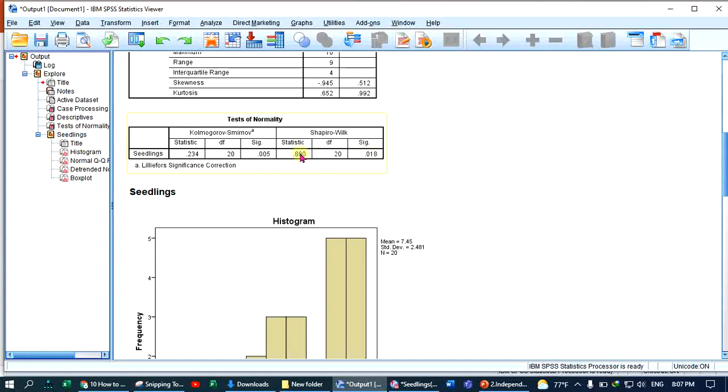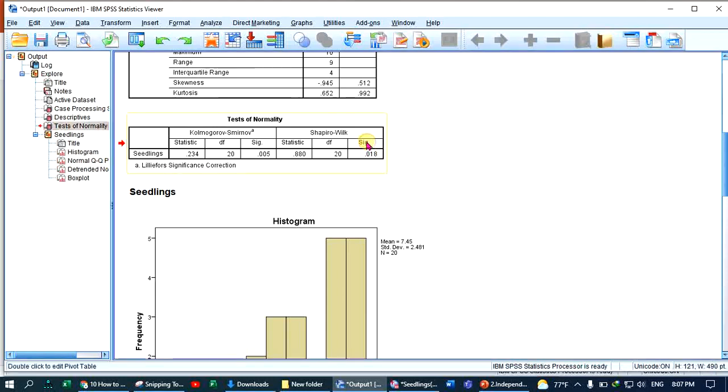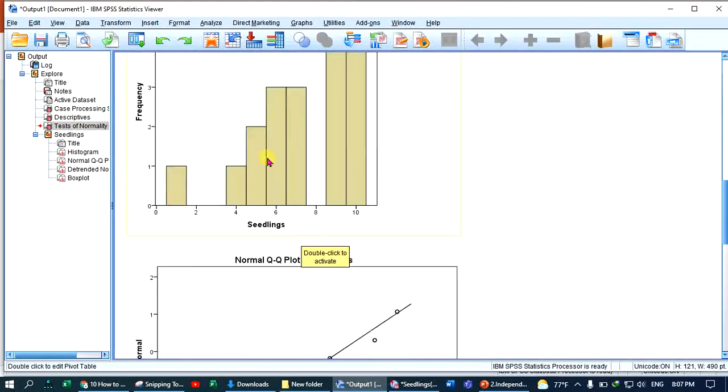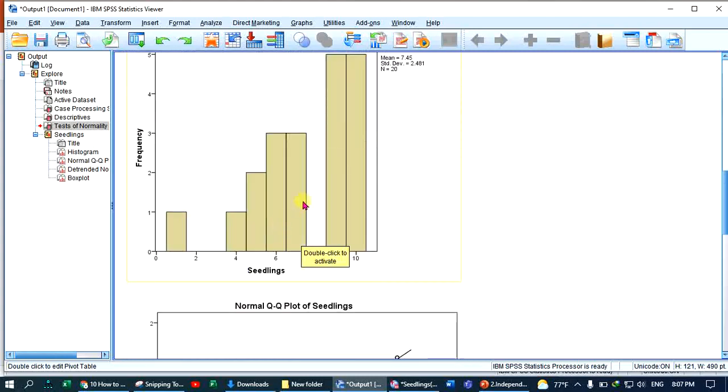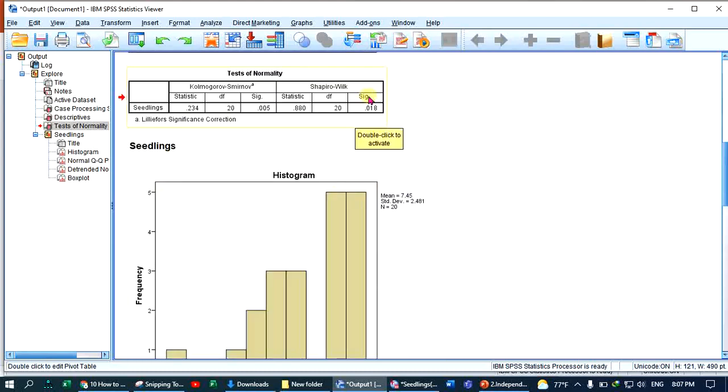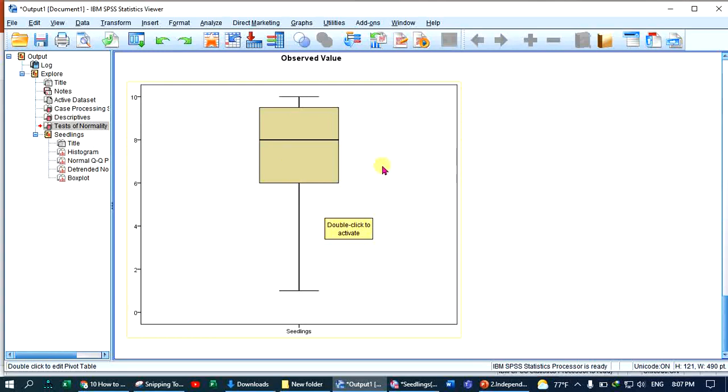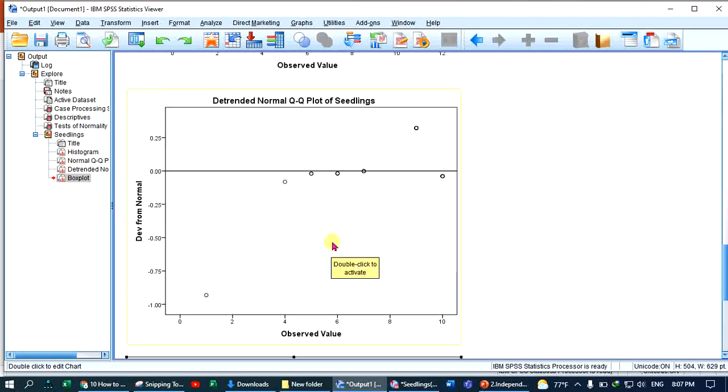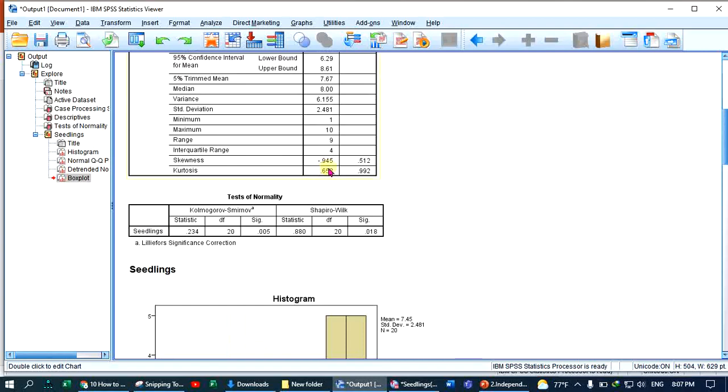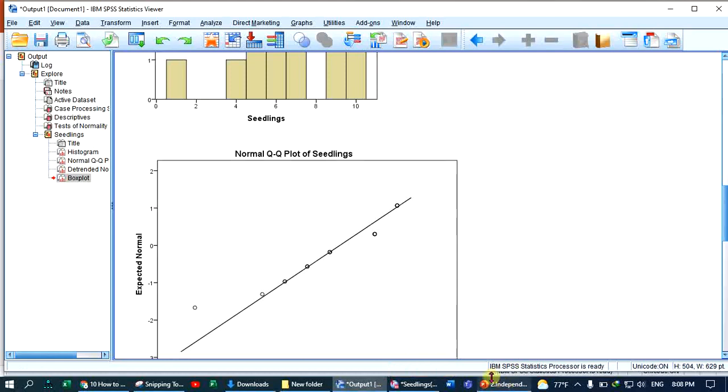Looking at the output, the data appears normally distributed graphically. The issue of normality is tolerable here. There is an outlier, but the normality issue is tolerable for making a decision.